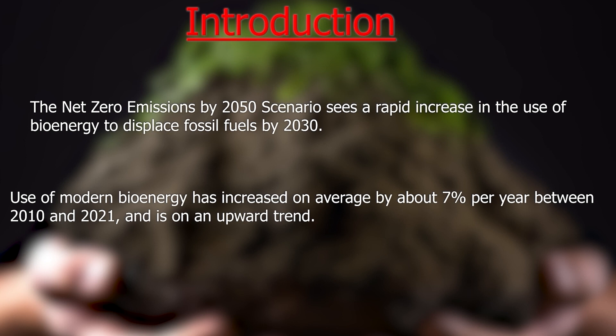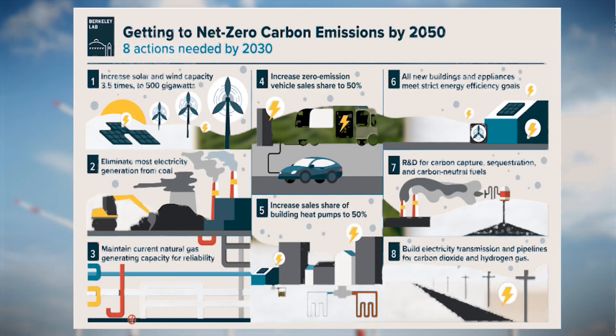The use of modern bioenergy has increased on average by about 7 percent per year between 2010 and 2021 and is on an upward trend. More efforts are needed to accelerate modern bioenergy deployment to get on track with the net zero scenario, which sees deployment increase by 10 percent per year between 2021 and 2030, while simultaneously ensuring that bioenergy production does not incur negative social and environmental consequences. Bioenergy is useful because of the flexibility in the context and sector it can be used in — from solid bioenergy and biogas combusted for power and heat, to liquid biofuels used in cars, ships and airplanes.